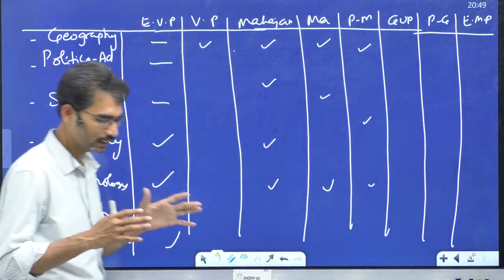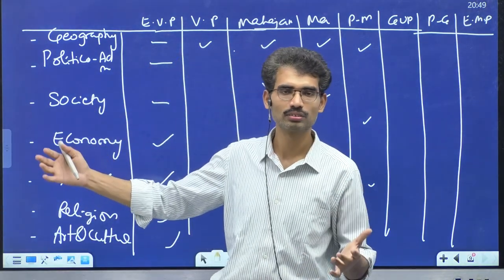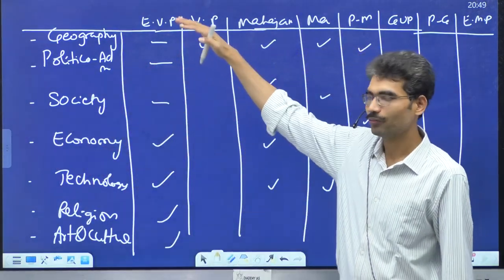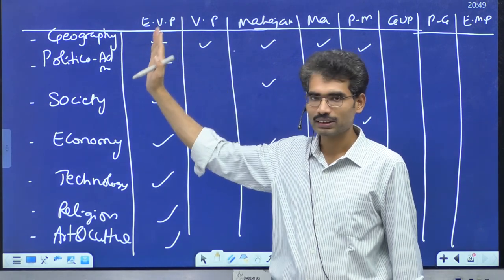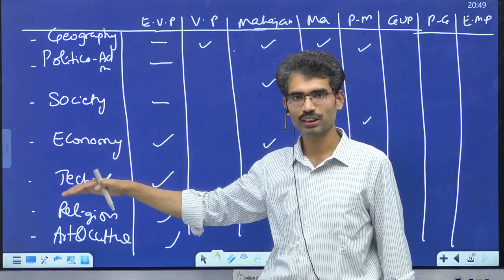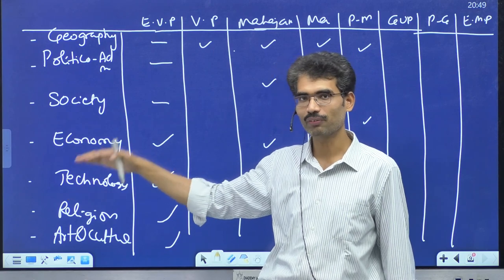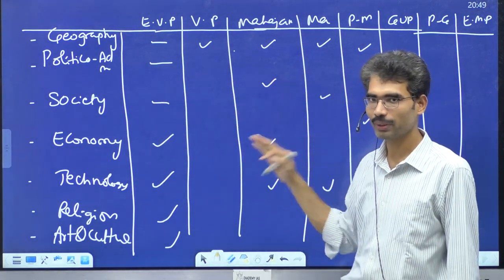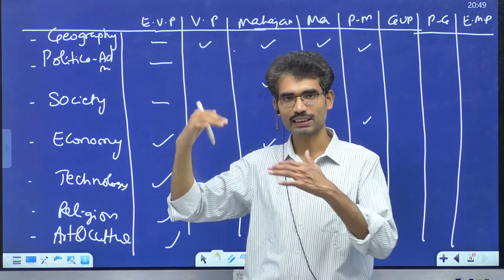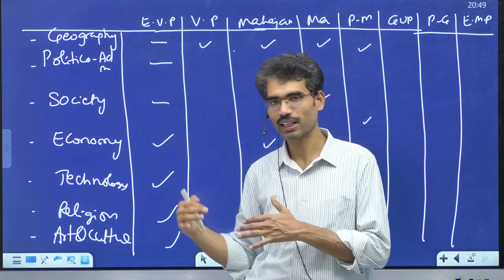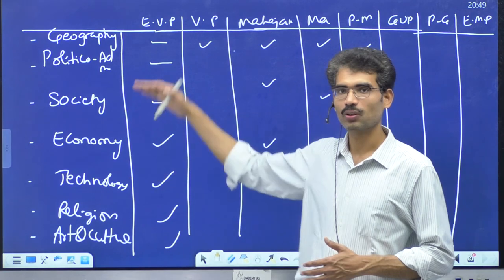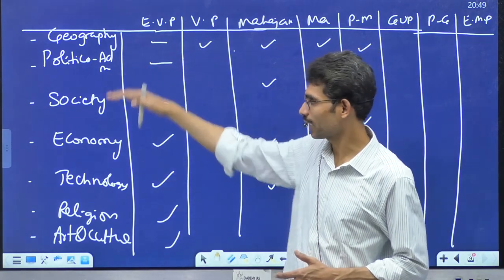If we take up to 14 units as Section A in Paper 1, we can fit the entire syllabus — about 12 ancient units plus early medieval as 13th and 14th — into this table framework. From unit 15 onwards is medieval. The UPSC paper will be shown next to confirm how the syllabus points match these dimensions.